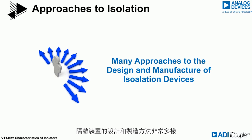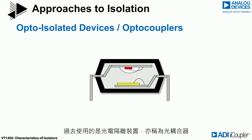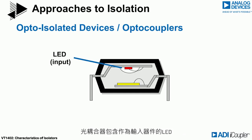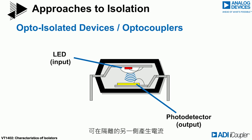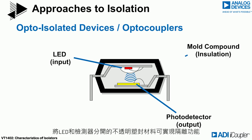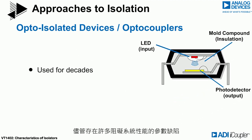There are many ways to design and manufacture isolation devices. Historically, opto-isolated devices, also known as opto-couplers, were used. An opto-coupler contains a LED as the input device and a photo-detector at the output. Data is transmitted by biasing the LED, which produces a current on the other side of the isolation.